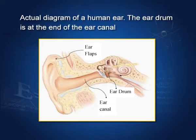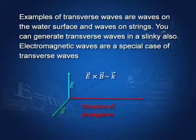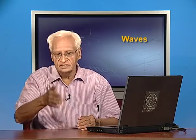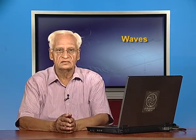This is the actual diagram of a human ear. You can see the funnel shape, the long ear canal, and at the end of the ear canal, the ear drum, which vibrates when the sound wave travels through the ear. The second type of wave is the transverse wave, in which the particles move up and down and the wave travels in the perpendicular direction. Examples of transverse waves are waves on a water surface — if you disturb water, waves travel outward while particles keep oscillating perpendicular to the wave direction. Electromagnetic waves and light waves are also transverse waves.